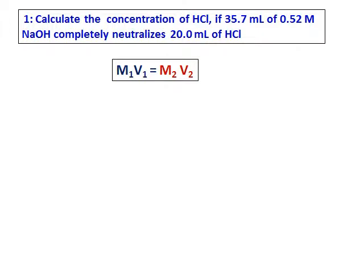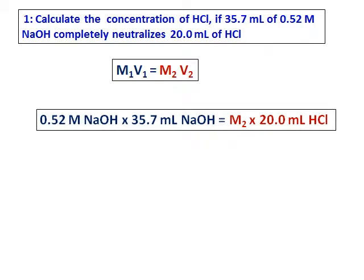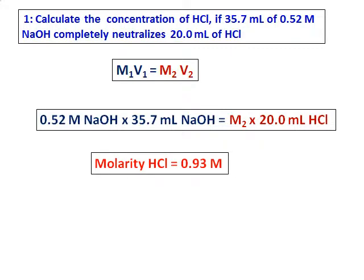Calculate the concentration of HCl if 35.7 milliliters of 0.52 molar sodium hydroxide completely neutralizes 20.0 milliliters of HCl. This is a reaction between an acid and base, that's why we call it a neutralization reaction. Use the same formula M1V1 equals M2V2. I take 0.52 molar sodium hydroxide and 35.7 milliliters sodium hydroxide. They combine together and I need to get the concentration of HCl. So divided by the volume of HCl, I get the molarity of HCl.